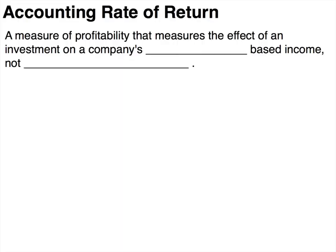Let's first define the accounting rate of return, or the accrual accounting rate of return. You may see it as the ARR or the AARR. It's a measure of profitability that measures the effect of an investment on a company's accrual-based income, not the net cash inflows.